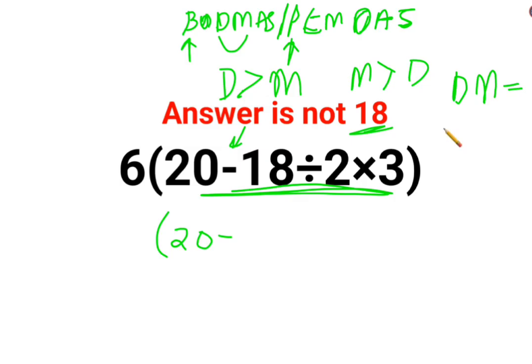So in sums like these, first you have to just go from left to right. Whatever operation happens first from your left hand side has to be done first. So we have 18 divided by 2 which is 9 multiplied by 3.